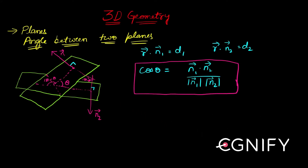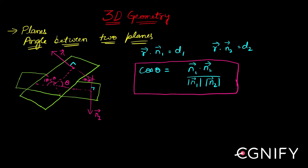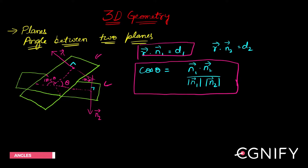Let us now look at how to find the angle between two planes. By now we have already seen how to write the equations of planes under various circumstances and conditions. So if I have two planes and their equations are given, this is the equation of the first plane and this is the equation of the second plane — how do I find the angle? This is the formula. Let's see how we get it.